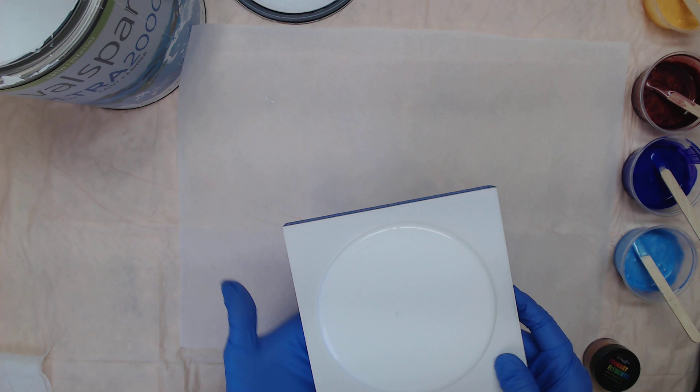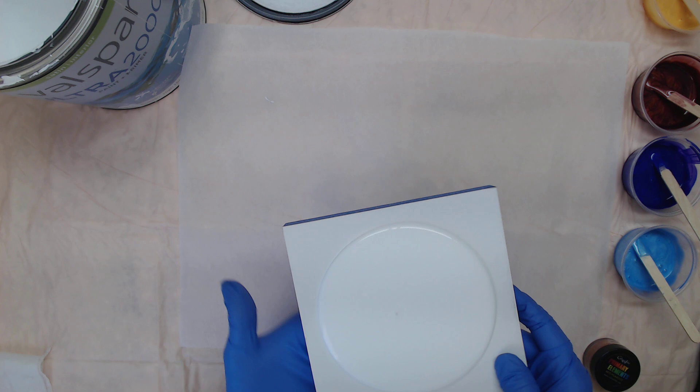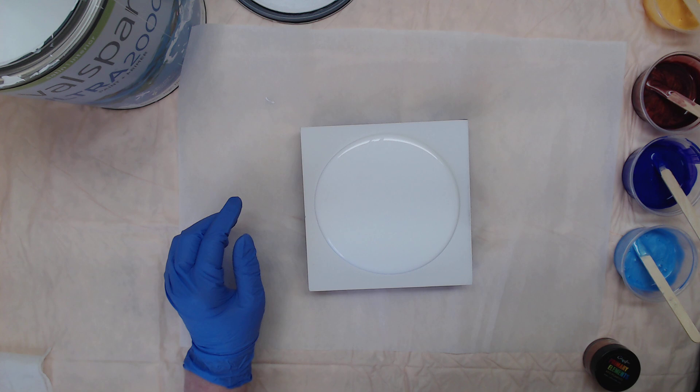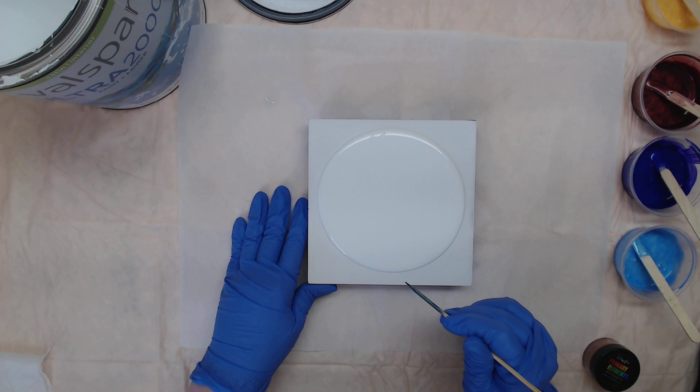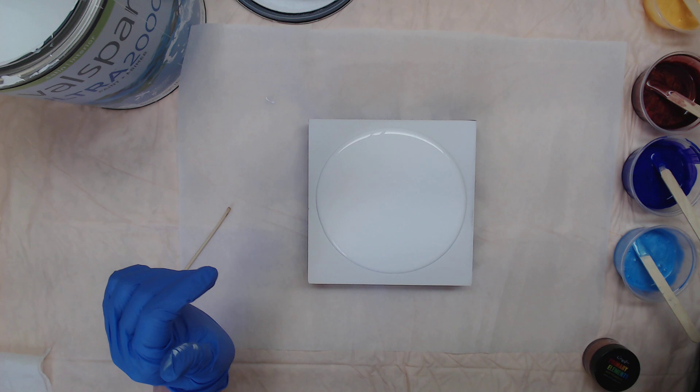I always have a skewer on hand because you're going to be popping air bubbles as you go along. You don't want them to come up through when you're blowing. So we're going to go ahead and start with that Mango Freeze. I like a nice big dollop to start with.